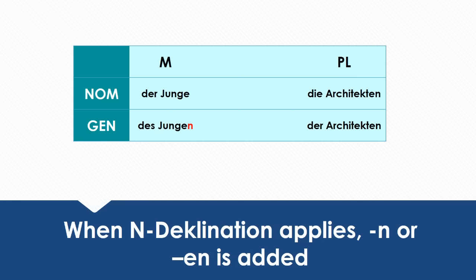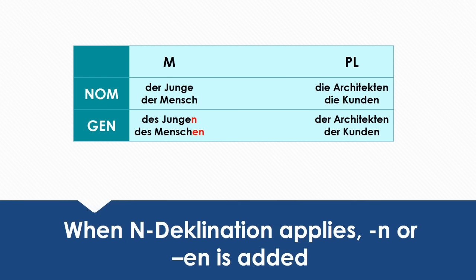When the rules of N-declension apply, we have to add an N or EN. This means that 'der Junge' becomes 'des Jungen' in the genitive case. Note that the plural doesn't change except for the article — so 'die Architekten' becomes 'der Architekten.' More examples: 'der Mensch' → 'des Menschen,' 'die Kunden' → 'der Kunden.'